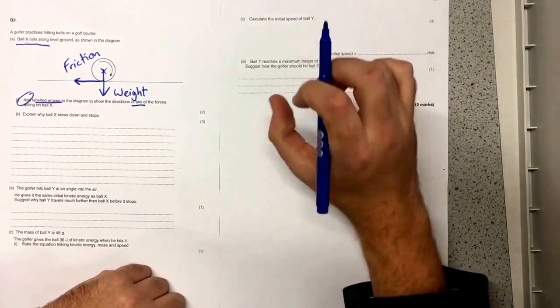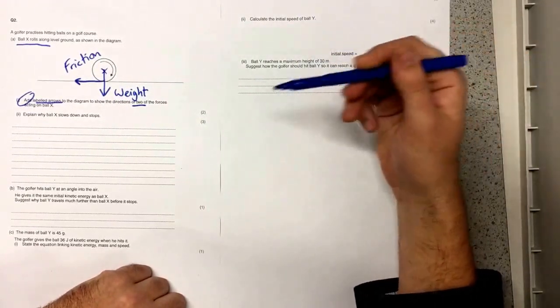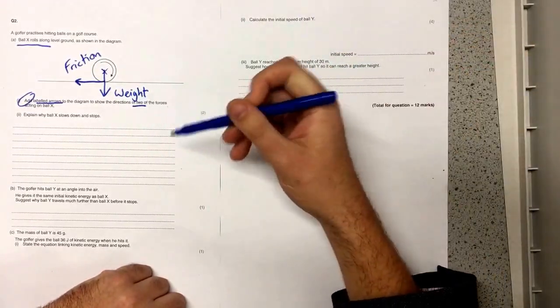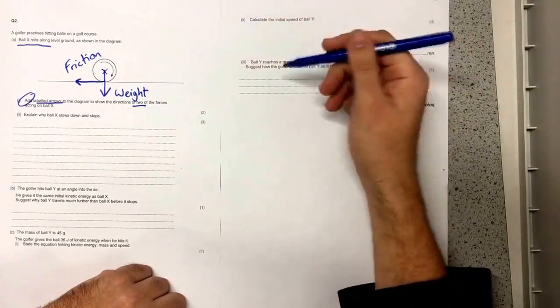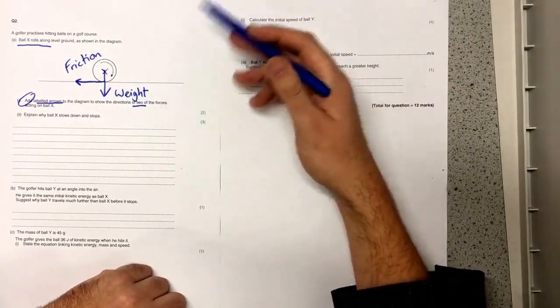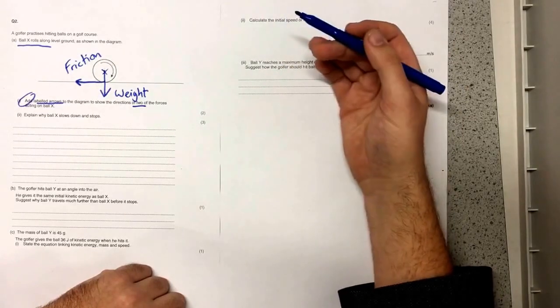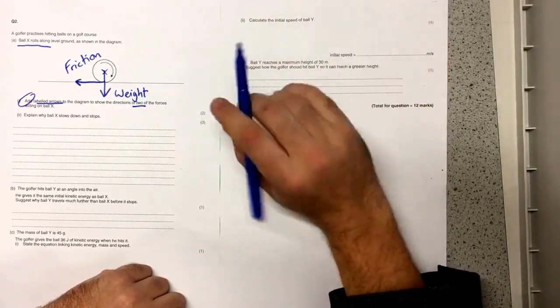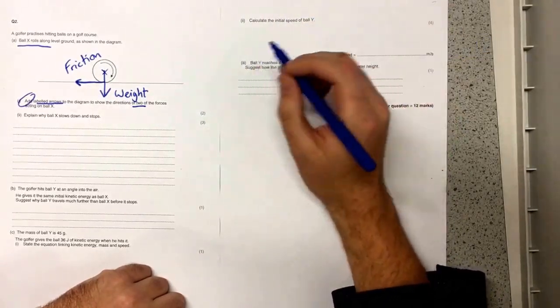We've got weight pulling it onto the ground we've got friction trying to drag it back and of course we could also put on the reaction force acting upwards from the ground against the weight but friction and weight are the simplest ones to guarantee us the marks.